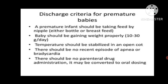Premature infants should be taking feeds by nipple — either bottle or breastfeeding. They should not be on IV fluids; the baby should have started making nipple feeding attempts, whether from the mother or by bottle. The baby should be gaining weight properly, around 10 to 30 grams per day. Temperature should be stabilized in an open cot, and there should be no recent episodes of apnea or bradycardia in the neonate, and no parenteral drug administration.